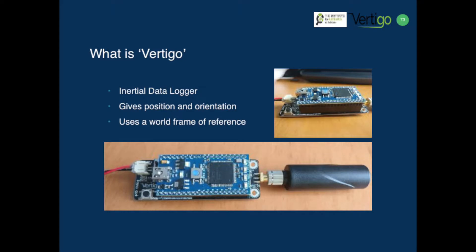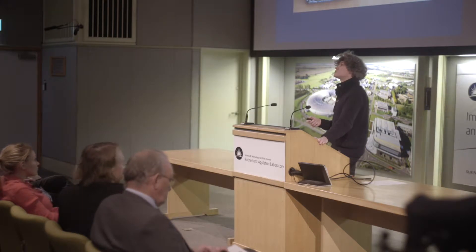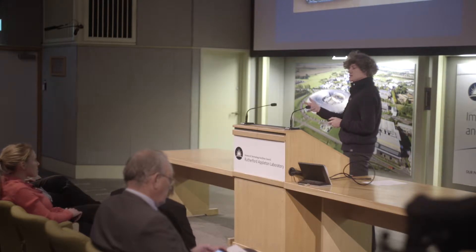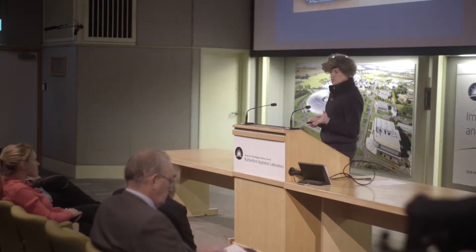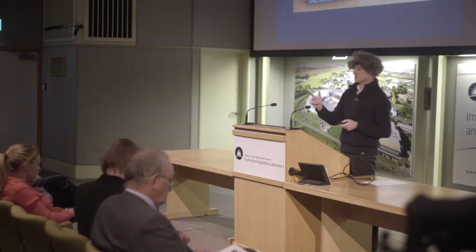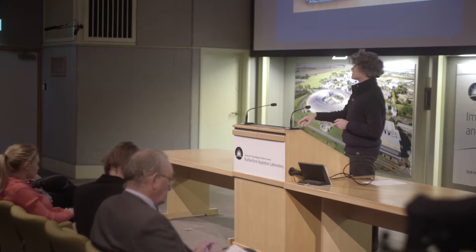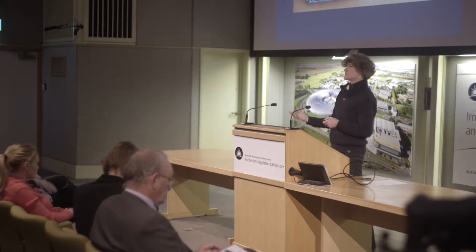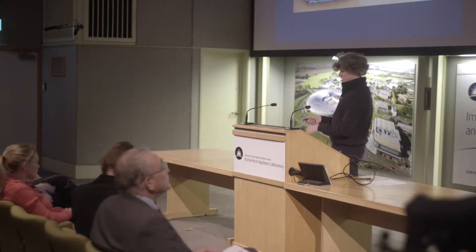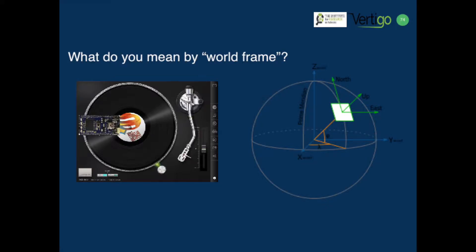So what's Vertigo? It's essentially a high-fidelity position and orientation data logger. It takes GPS data at 10 Hz and it takes IMU data at 200 Hz. I think its unique selling point is that it gives these rotations in a world frame of reference. Most tools that give orientation and position will give those in the frame of reference of the device or the measuring unit.